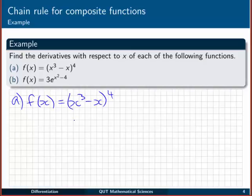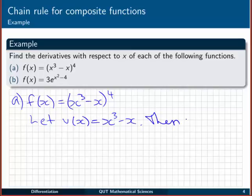This would be fine if we just had x to the fourth power, but we've actually got a function to the fourth power. So I'm going to let that function be v, so v is equal to x cubed minus x. That then means that f, or y, is equal to v to the fourth power.